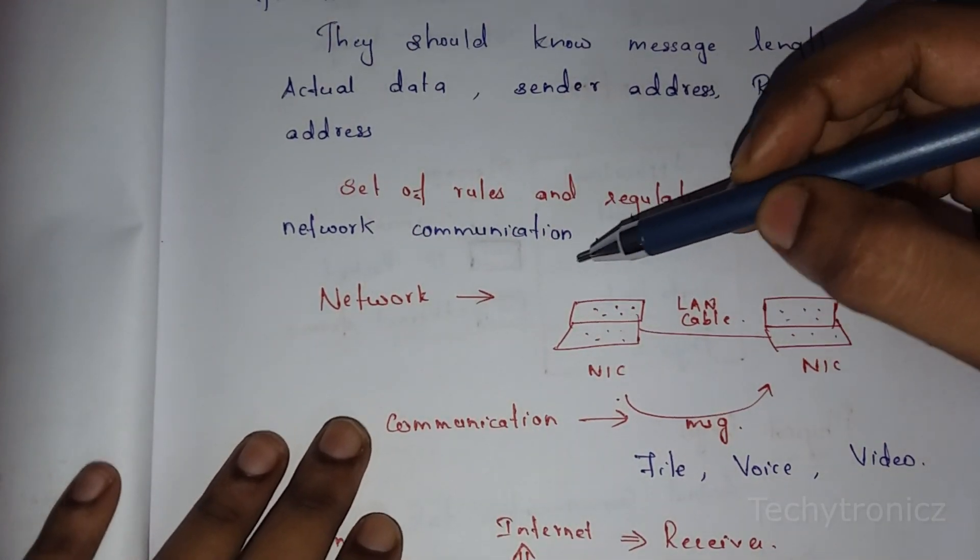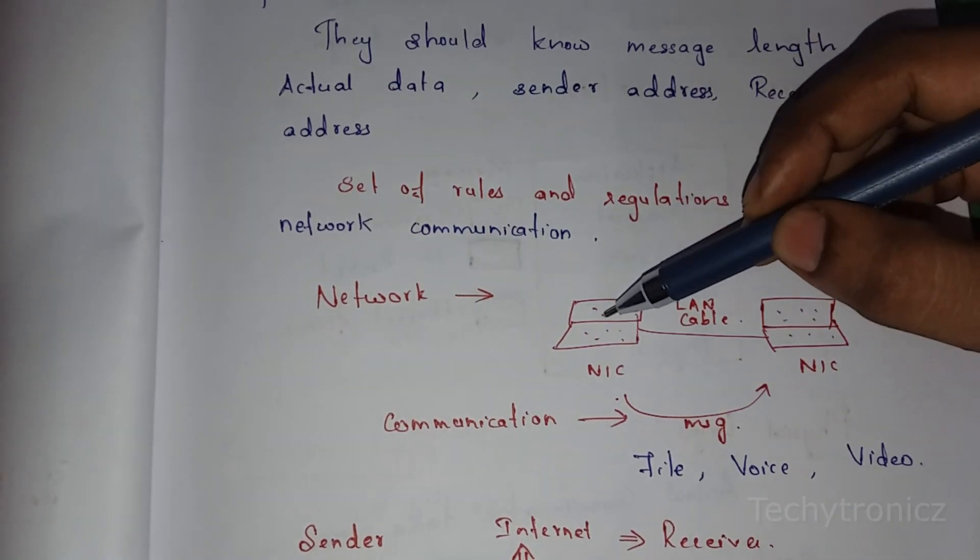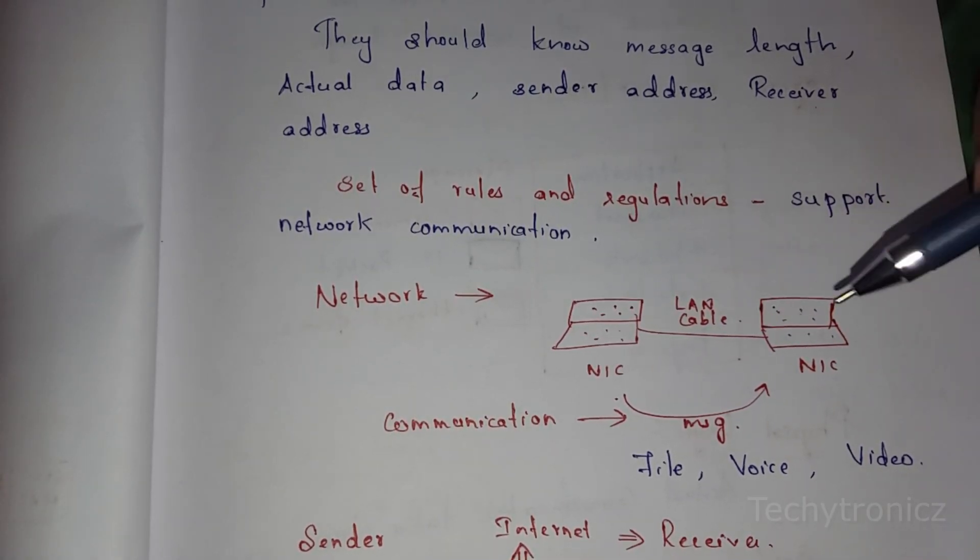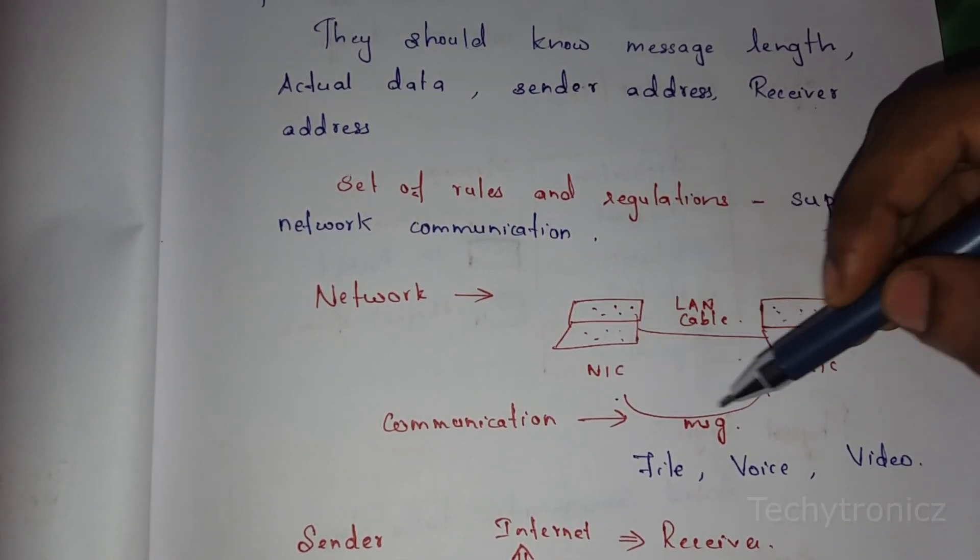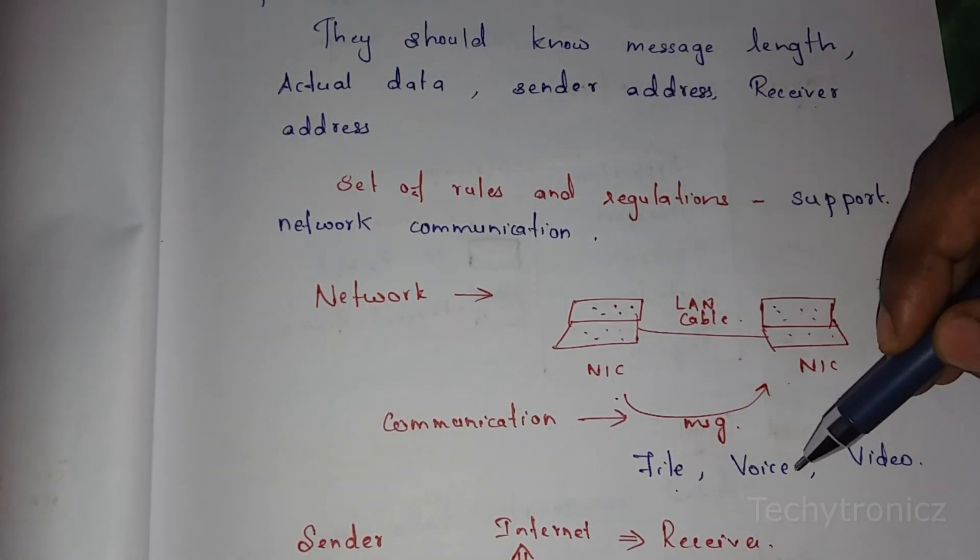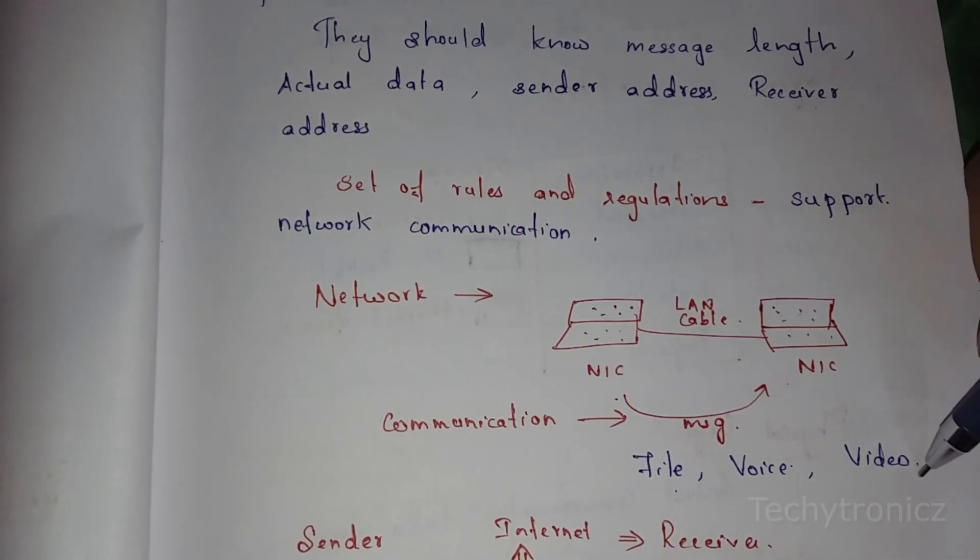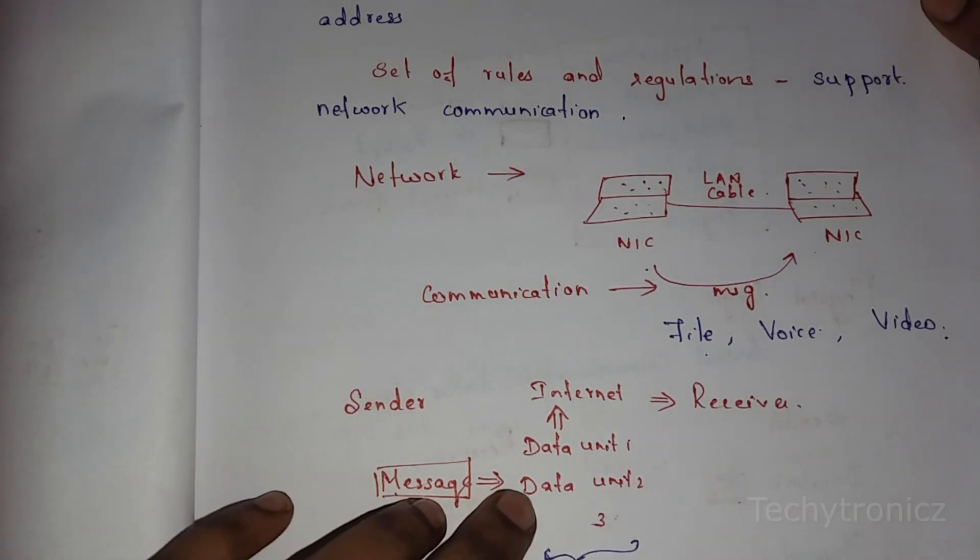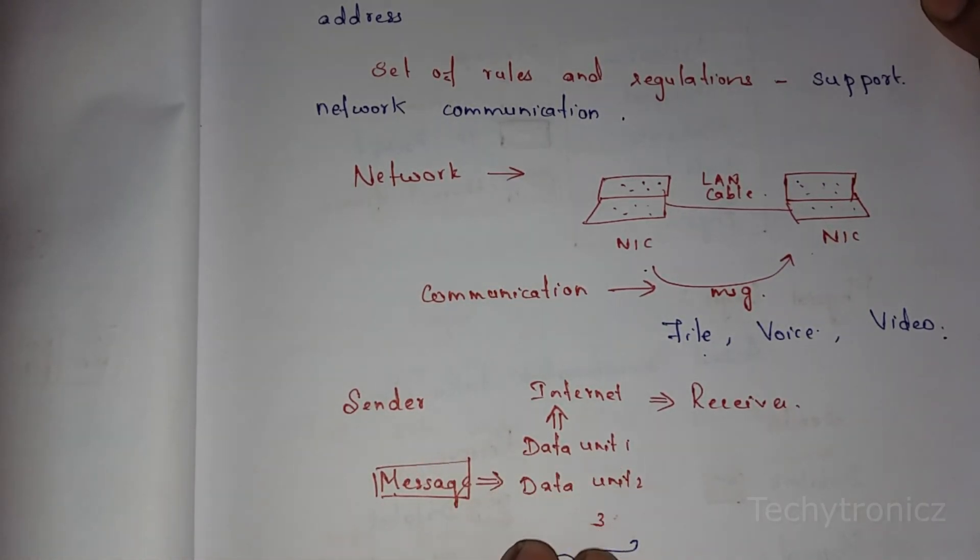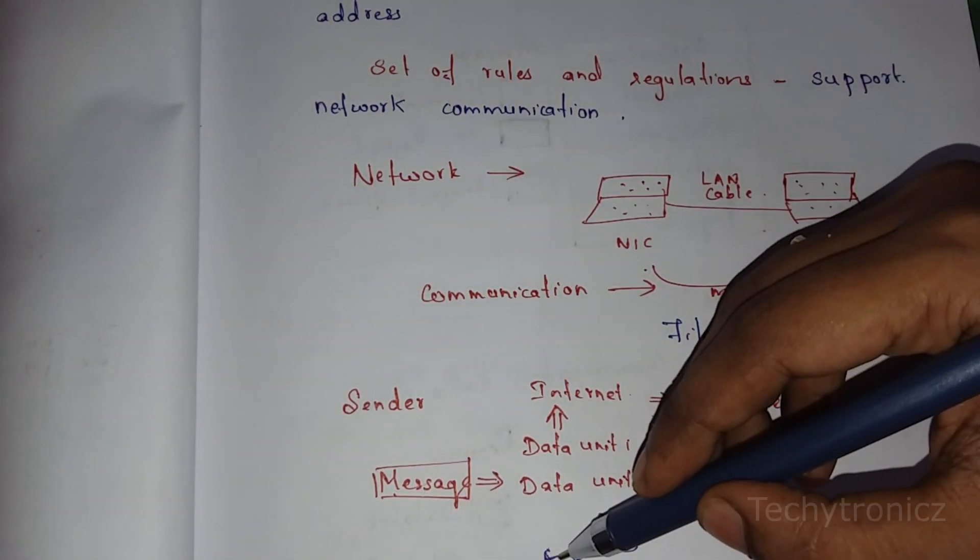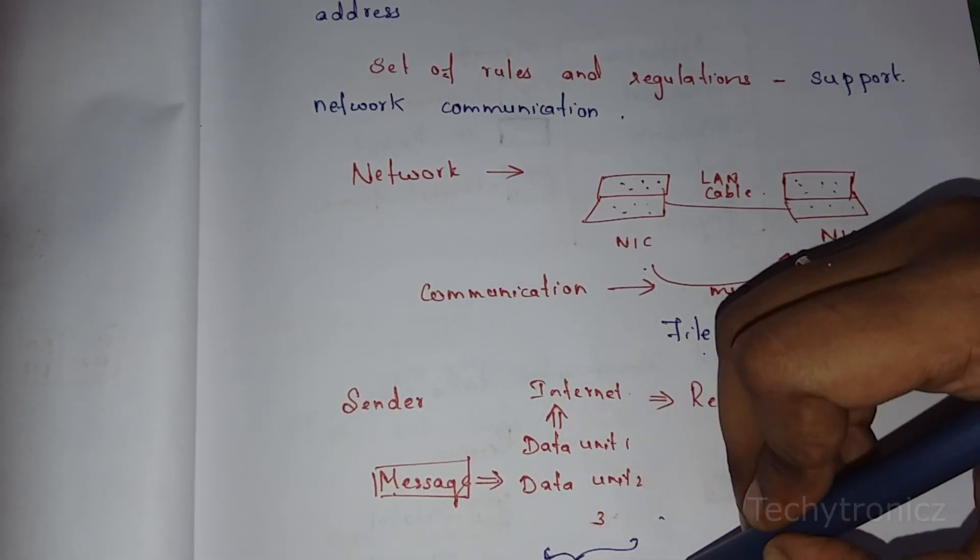A network consists of two or more computers interconnected for communication. Computers transmit messages - it may be files, voice, or video. On the sender side, information is transmitted as data units. These data units are split and sent over the internet to reach the receiver. The data units in TCP are called segments.